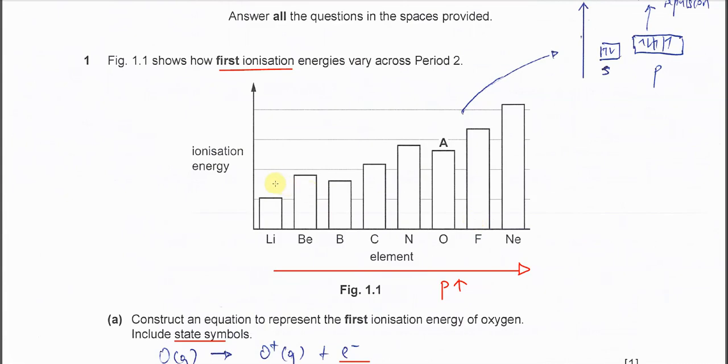So this one is group 1, 2, 3, 4, 5, 6. Okay, the new syllabus actually is group 1, 2, 13, 14, 15, 16. So between group 15 and group 16, there is an irregularity. It's supposed to be higher but it's actually lower.